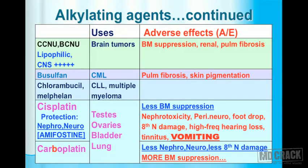Moving to the rest of the alkylating agents: CCNU and BCNU are highlighted because they are lipophilic, and their penetration into the CNS is excellent. We make use of this fact — CCNU and BCNU are preferred for brain tumors. Adverse effects include bone marrow suppression, renal toxicity, and pulmonary fibrosis.